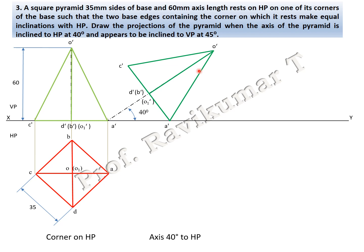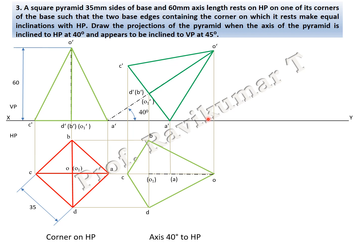The next step is 40-degree inclination to HP. Take 40 degrees and incline the triangle. The same naming is copied. Draw projection lines downward and do the naming. Looking from the bottom, all outer edges are visible — complete them with visible lines. Looking from the top, point A is invisible, so joining from A to any other point is an invisible line. A to B is invisible, A to D is invisible, and A to O is invisible.